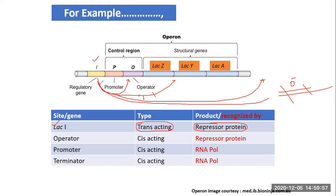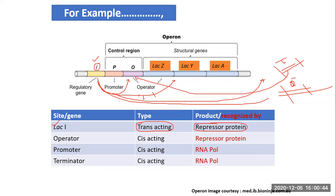Because lac I functions by coding for a diffusible product, it can act on a site close to it, a site at a distant place, or a site on another molecule or allele. If this lac I is mutant, the operon will be constitutively expressed regardless of whether lactose is present or absent. But if we introduce a wild-type allele of lac I, the repressor protein from the wild-type will bind to the operator and restore inducibility — the original condition is restored by the wild-type trans-acting allele.